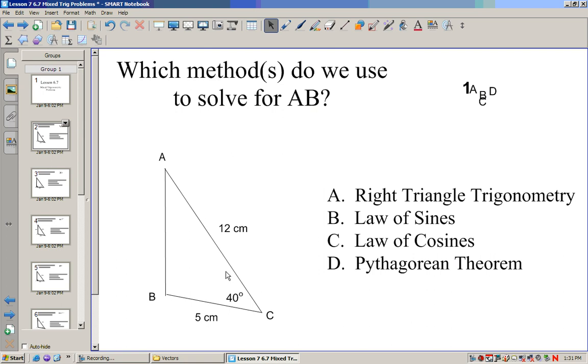So in this situation, what would we use in order to solve for AB? Right triangle trig, law of sines, law of cosines, or Pythagorean Theorem. Since this is not a right triangle, we cannot use these two things. And since it's side-angle-side, we'll use the law of cosines.